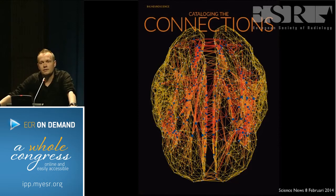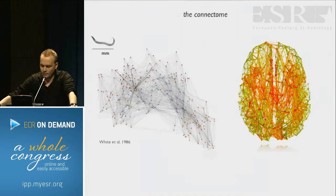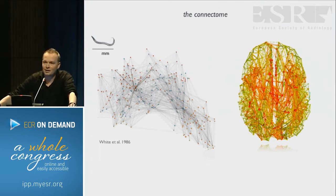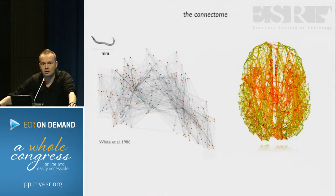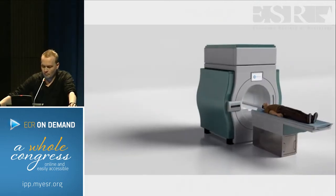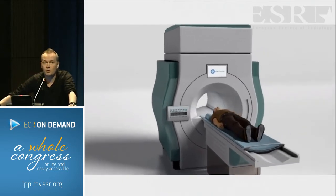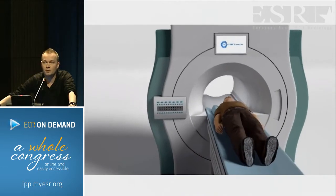As we've seen in the previous two talks, there is currently a large interest in mapping the connections of the human brain, both on the microscopic scale. On the microscopic scale, most of the work is done in animals, but future technology can also help us achieve a connectome at higher resolution, perhaps even at the cellular level. For now, we stick to a more macroscopic scale if we want to look into the human brain, and MRI is probably one of the best techniques to do that.